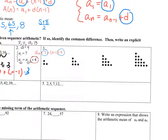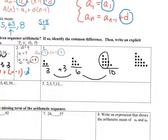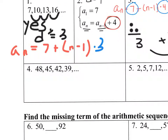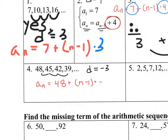Problem 3 involves dot patterns: 3 dots, 6 dots, then 7, 8, 9, 10 dots. It's not arithmetic because the first jump adds 3 and the second adds 4 — you're not adding the same number each time. Problem 4 has a common difference of negative 3, so it is arithmetic. The explicit formula is a sub n equals 48 plus (n minus 1) times negative 3.